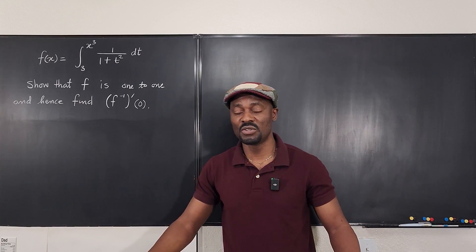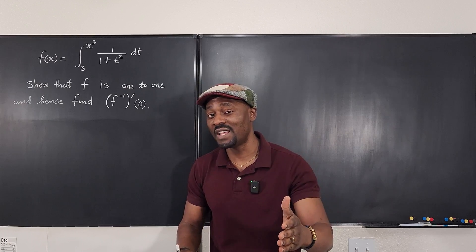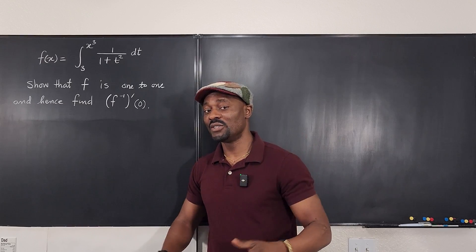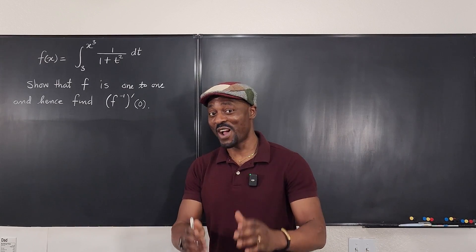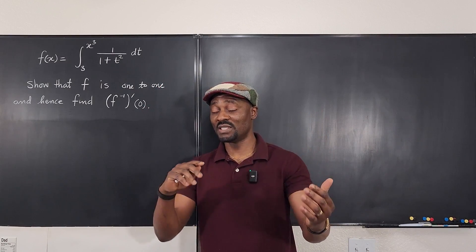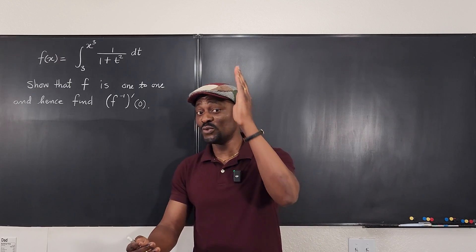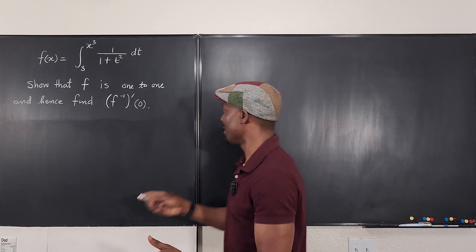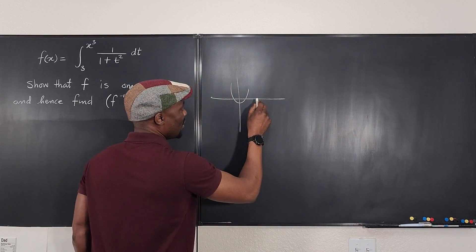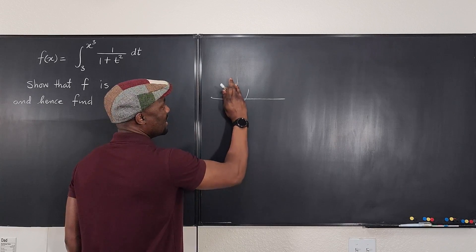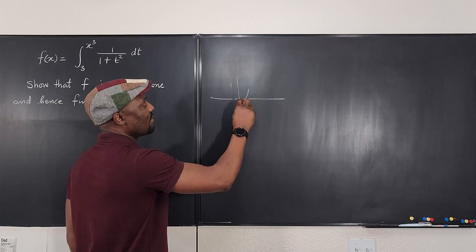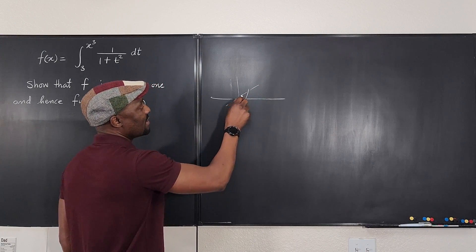To show that a function is one-to-one, take its derivative. If the derivative is always negative or always positive — with no switch between the two — then it's a one-to-one function. A parabola is not one-to-one, so it doesn't have an inverse. To give it an inverse, we cut off one part of the parabola and pretend the other half doesn't exist.